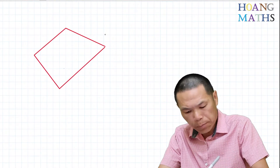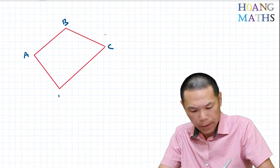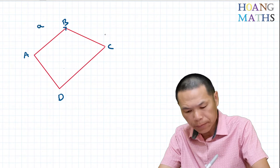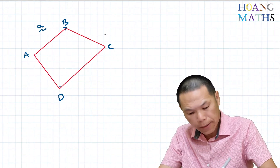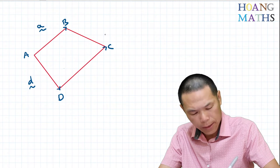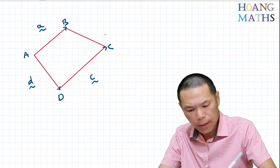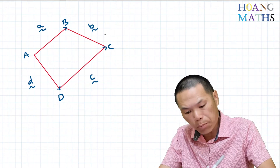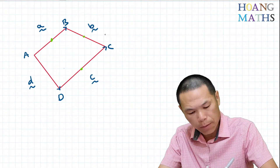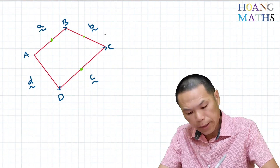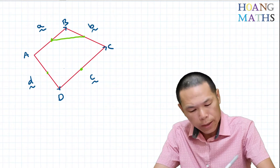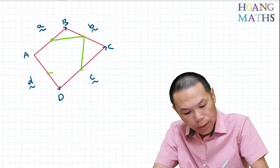Let's say this is point I, B, C, D. So let's say vector IB is vector I, vector ID is vector D, vector DC is vector C, and vector BC is vector B. This is the midpoint of IB, this is the midpoint of BC, this is the midpoint of DC, and this is the midpoint of ID. So the question is, we need to prove the quadrilateral constructed from these midpoints is a parallelogram.